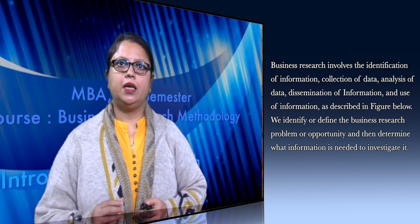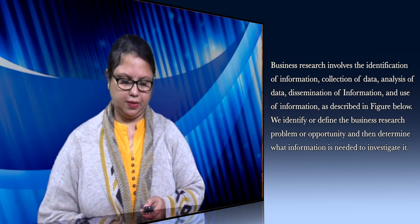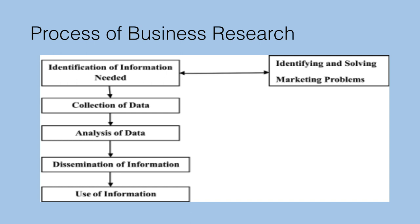We define the business research problem or opportunity and then determine what information is needed to investigate it. Here I am showing you the different steps of the business research process. First is identification of the need or the problem. Then collection of data — either through primary data collection by going to the field, or from secondary sources like available literature. Then we analyze the data, interpret it into feasible solutions for our study, and then use this information in the field of business.